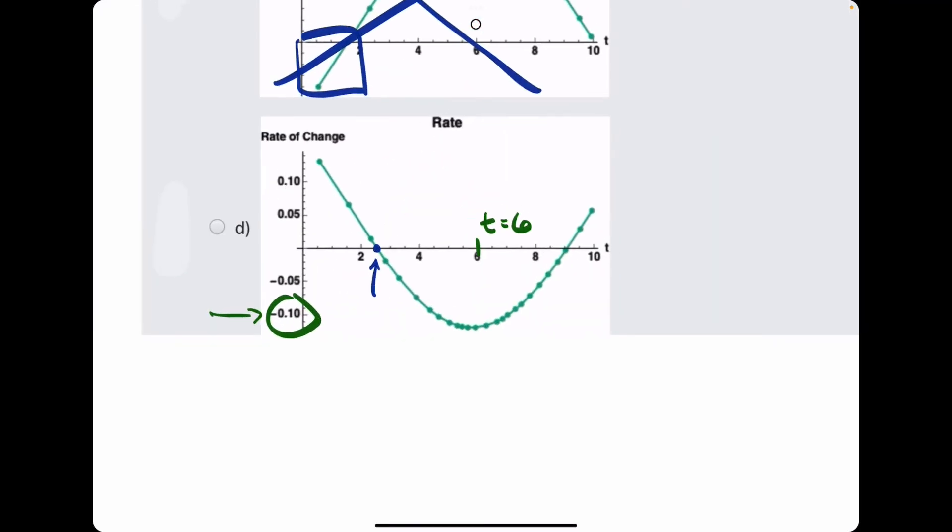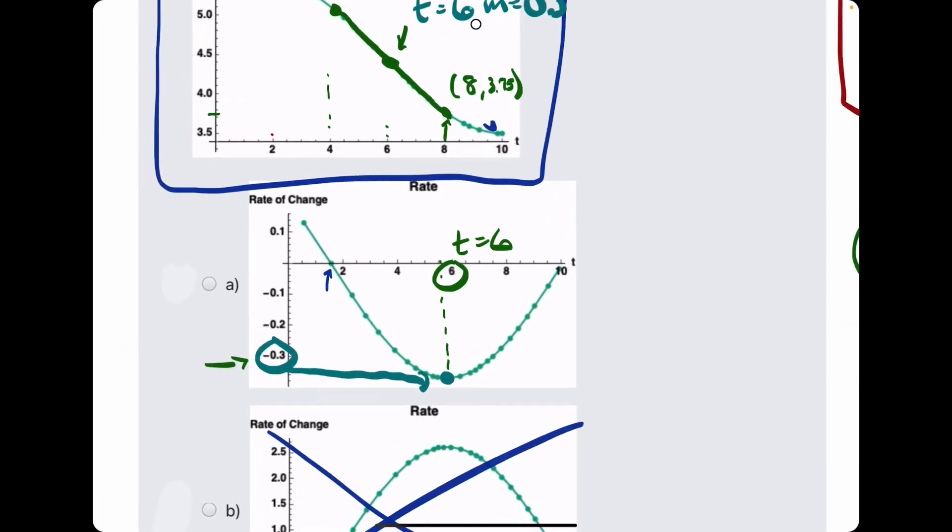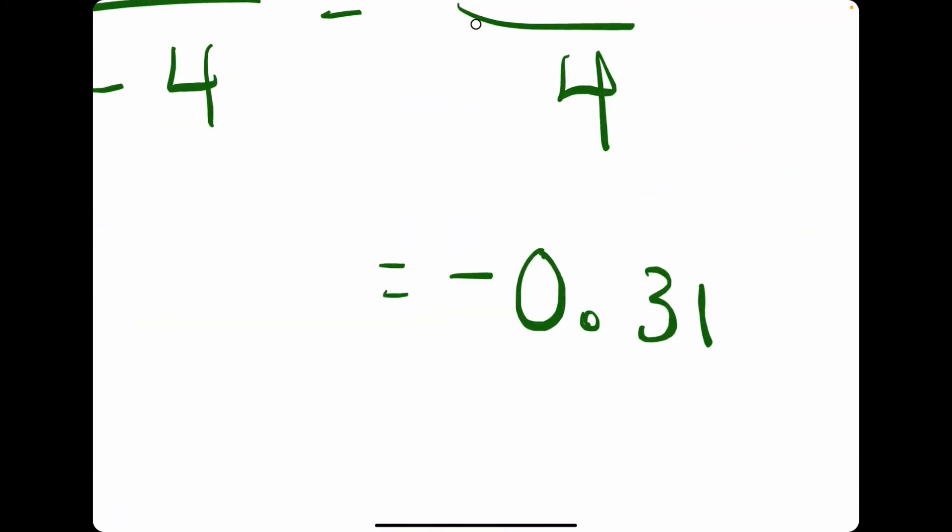while on option D, it's just barely below negative 0.1. So, we know that D cannot be the answer because the y value of option A's graph at t equals 6 matches the slope of the original graph at t equals 6.